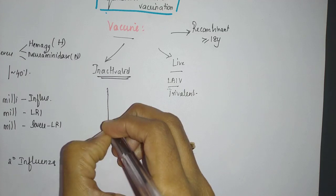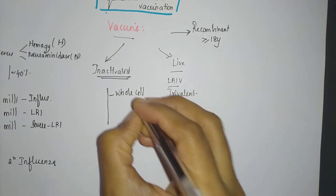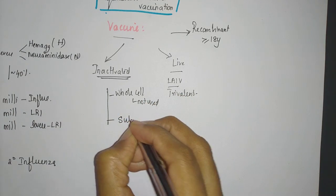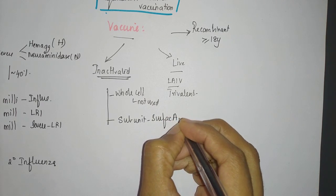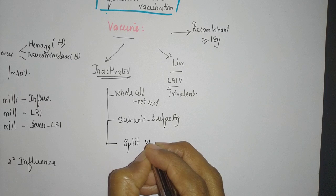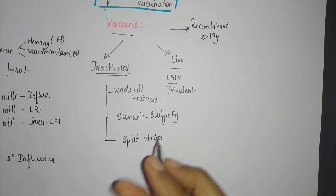Inactivated vaccine is of three types: whole cell, which is not used anymore; subunit surface antigen; and the third variety is split virion. This split virion variety is what is mostly used and what we come across usually. Examples are Vaxigrip and Fluquadri.